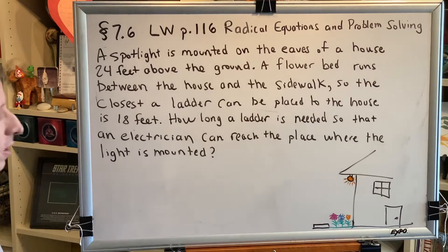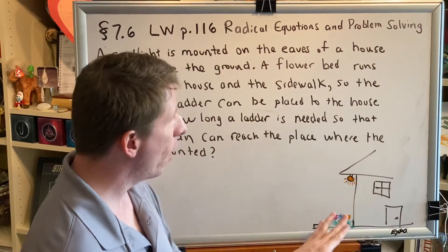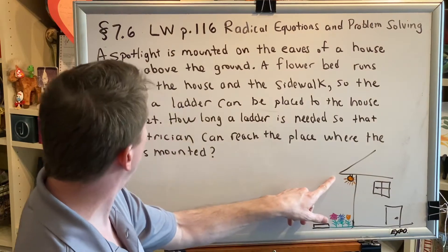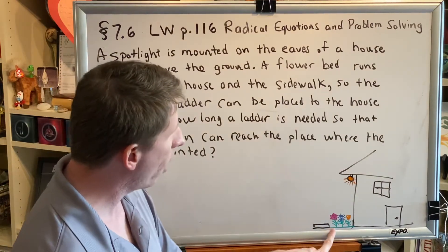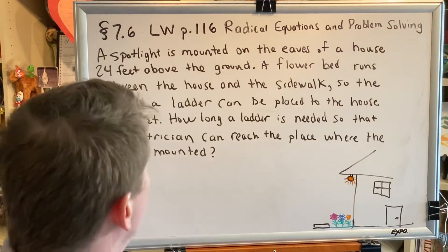Okay, so it helps to draw a picture for this problem. We've got our house, we've got our light which is mounted on the eaves of the house, we've got our flower bed here, and we've got our sidewalk. Now let's go ahead and label some of the dimensions that have been provided for us in the problem.